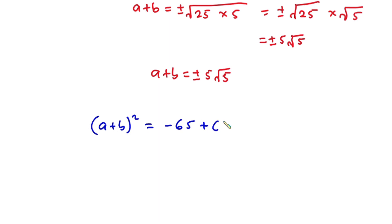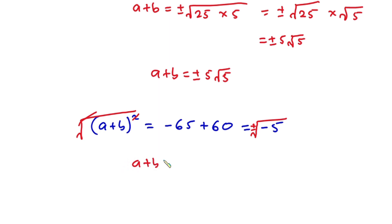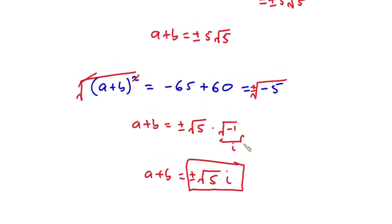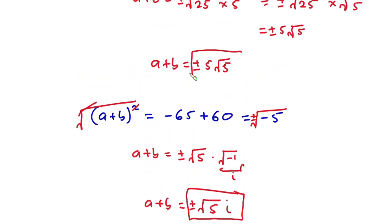Now let's consider the negative side: (a + b)² = -65 + 60 = -5. Taking the square root of both sides, we have a + b = ±√(-5) = ±√5 × √(-1), and this is the imaginary part. So a + b = ±i√5. Therefore, a + b is either ±i√5 or ±5√5. I hope you found this video useful — have a nice day and see you in the next video.